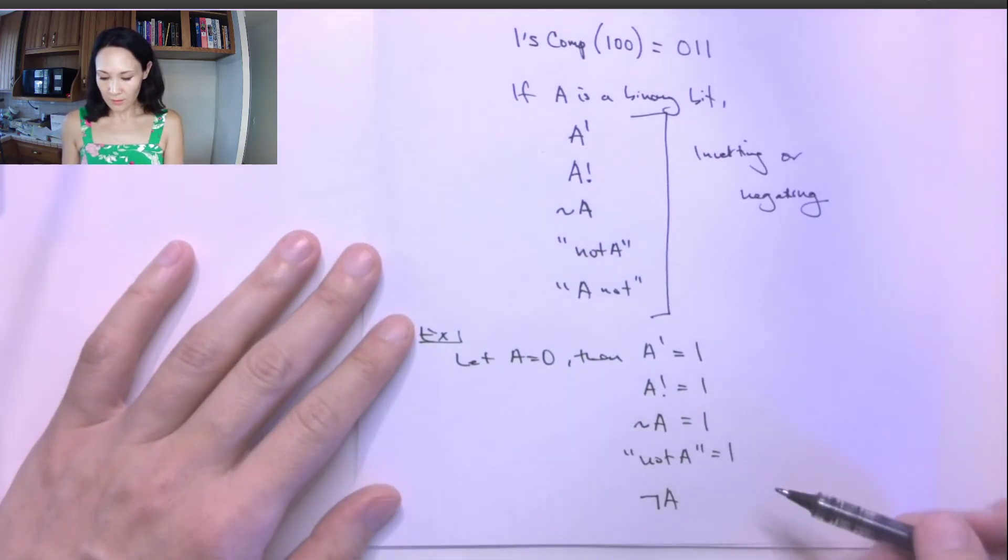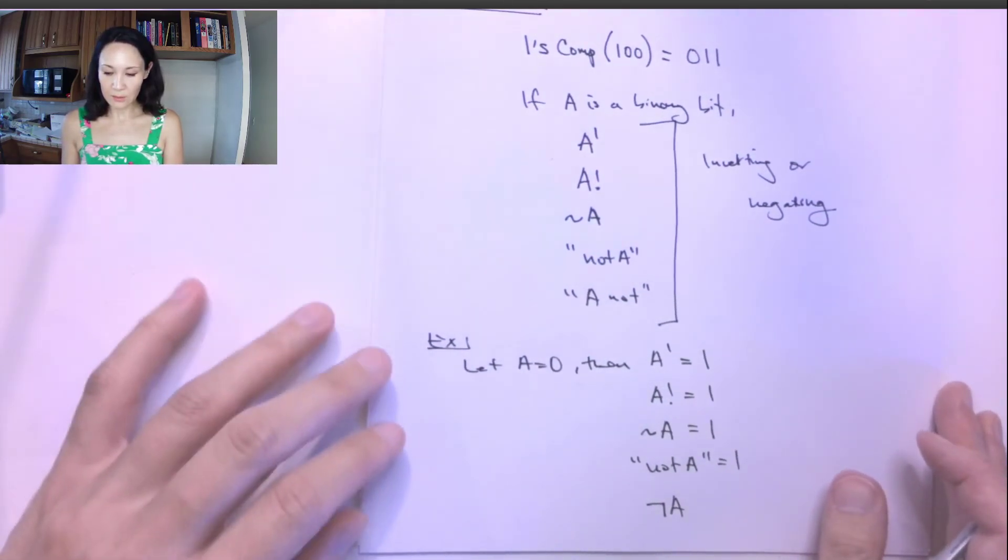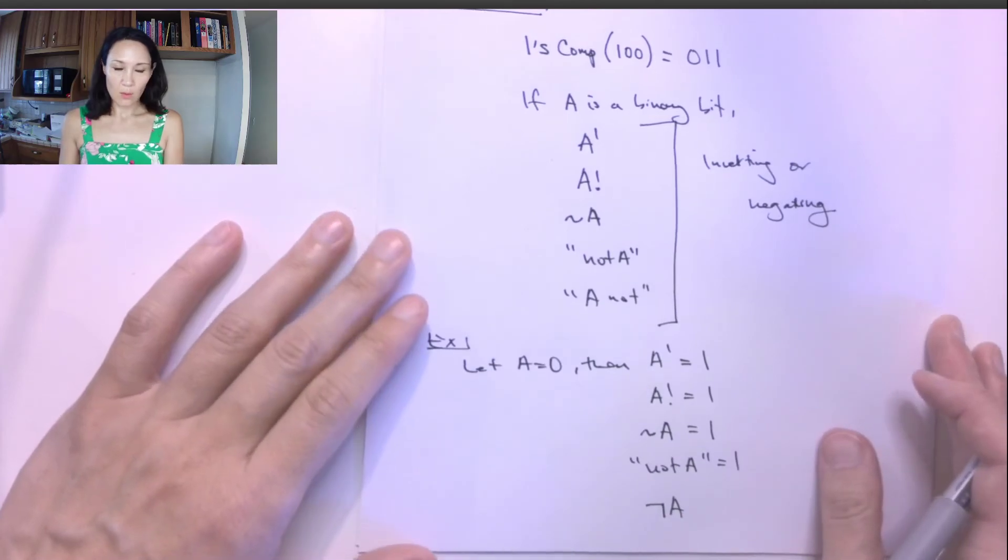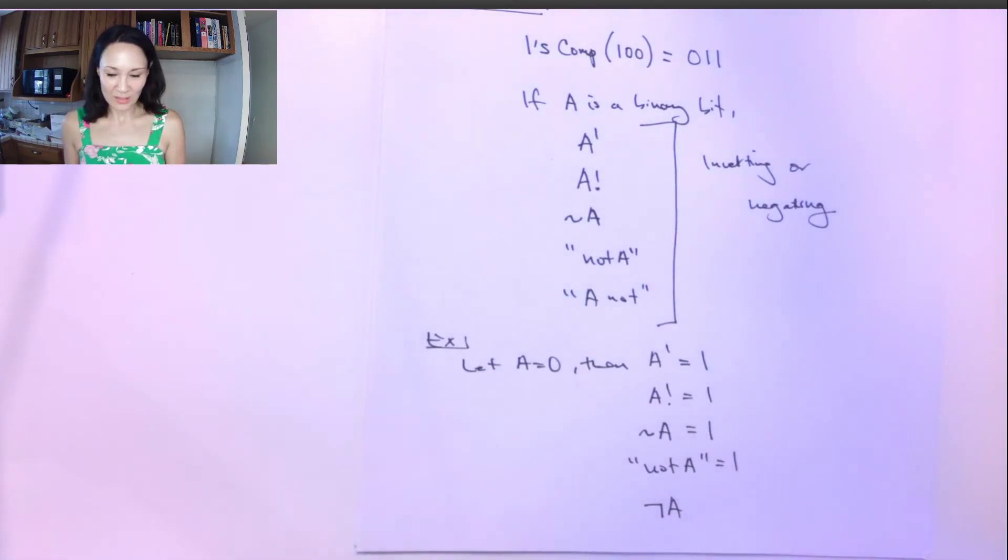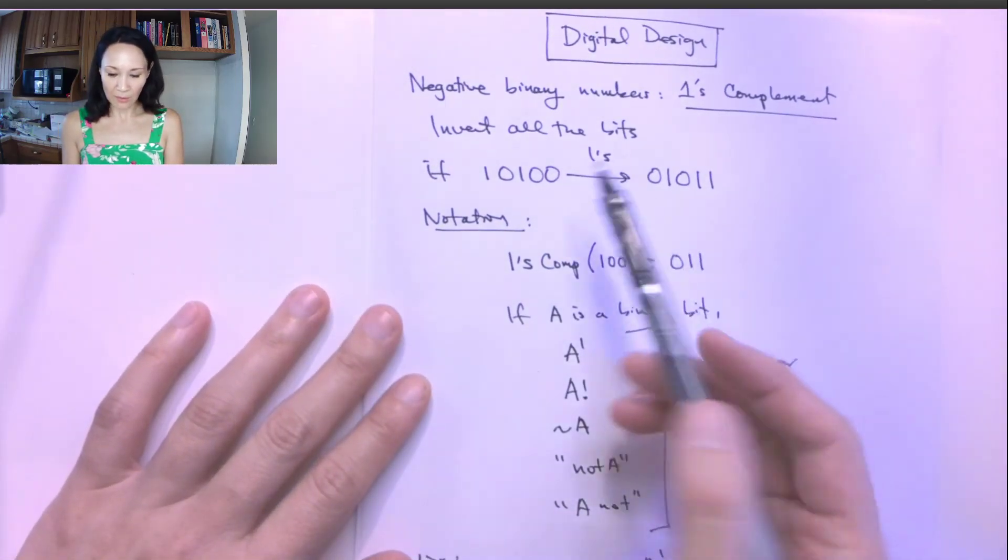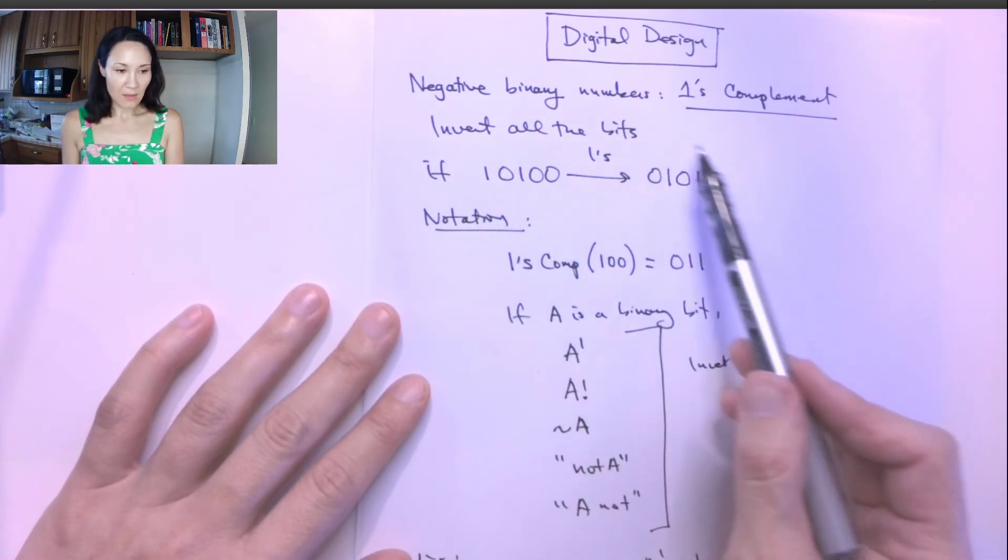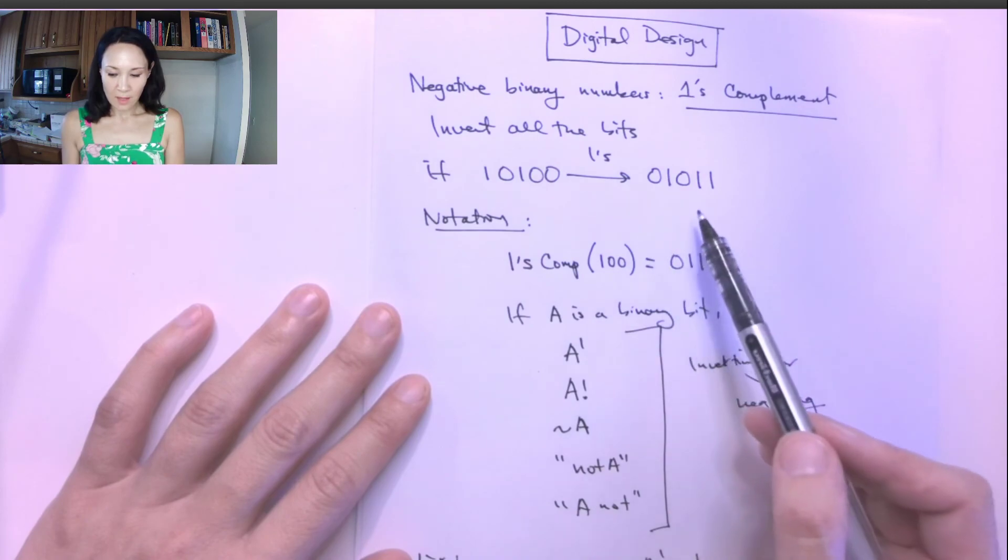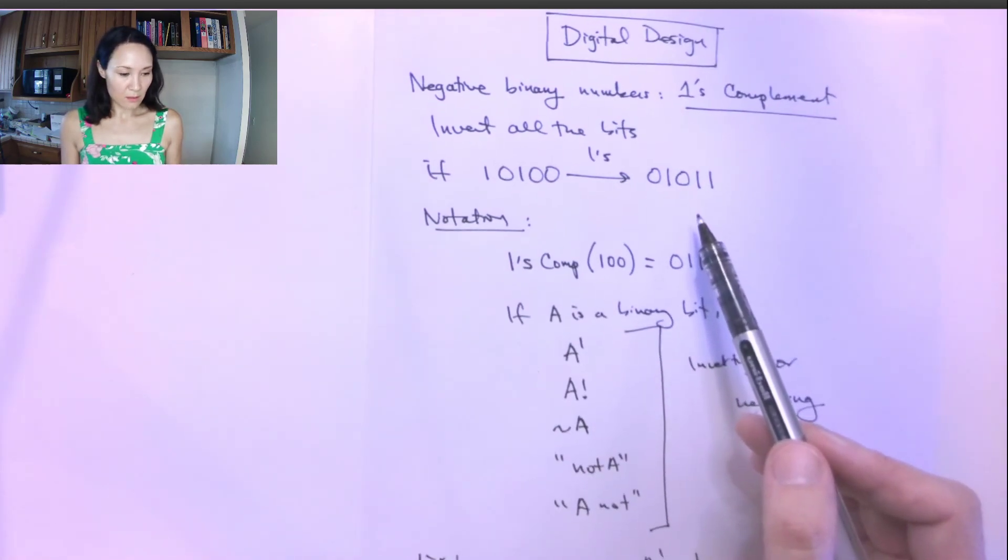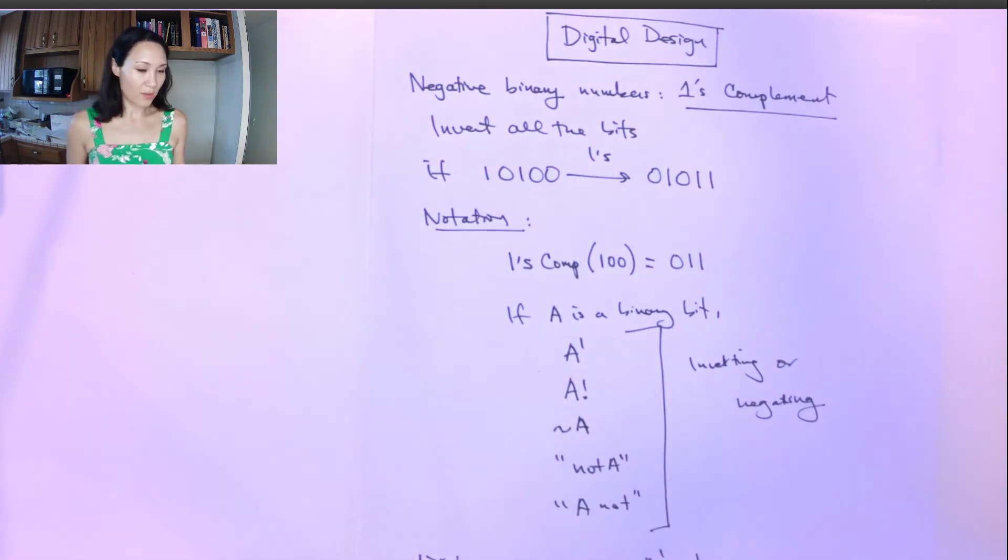And so this is all the idea of negating or taking the complement or inverting or even toggling. Those all basically mean the same thing. It's just if it's a one, we change it to a zero. If it's a zero, we change it to one. So if we're taking one's complement of a number, any binary number, all we do is just flip the bits, and this becomes the negative of the original number, and that's one's complement.